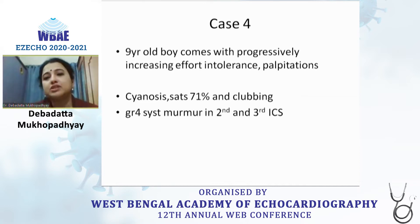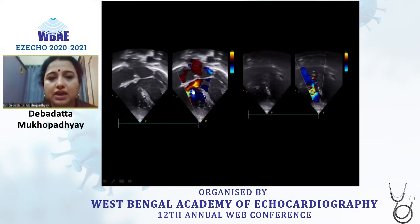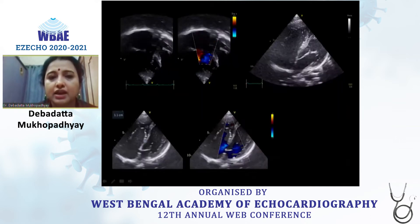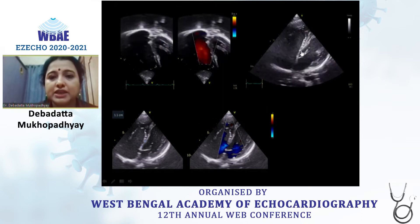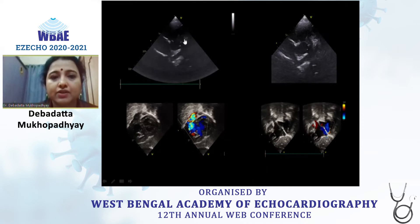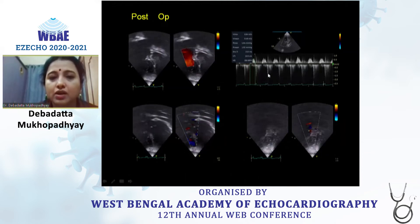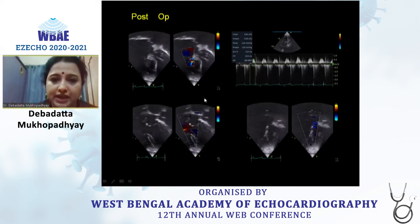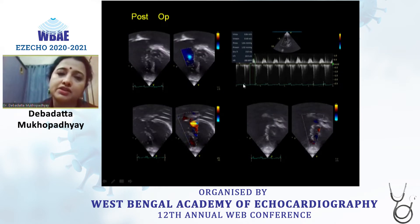However, patients don't come reading the book. We had a pre-adolescent boy with effort intolerance, palpitations, cyanosis, and clubbing. This child had a large malaligned VSD, infundibular and pulmonary valvar stenosis, valvar overriding, and also Ebstein's anomaly of the tricuspid valve — with displacement of the septal leaflet of about 10 mm or more. He had a narrow MPA and branch pulmonary arteries with no ASD. This child underwent total correction for the intracardiac repair as well as cone reconstruction of the Ebstein's valve, with no residual VSD or significant RVOTO.